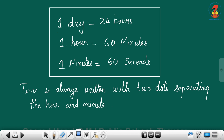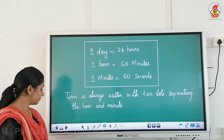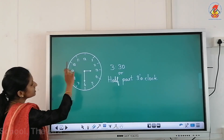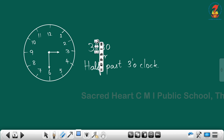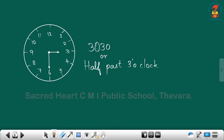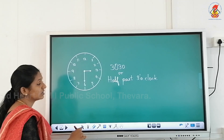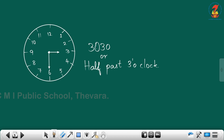Time is always written with two dots separating the hours and minutes. In this clock, the hour hand is on three and the minute hand is on six, so we can say the time is three thirty. We can say this is half past three o'clock.